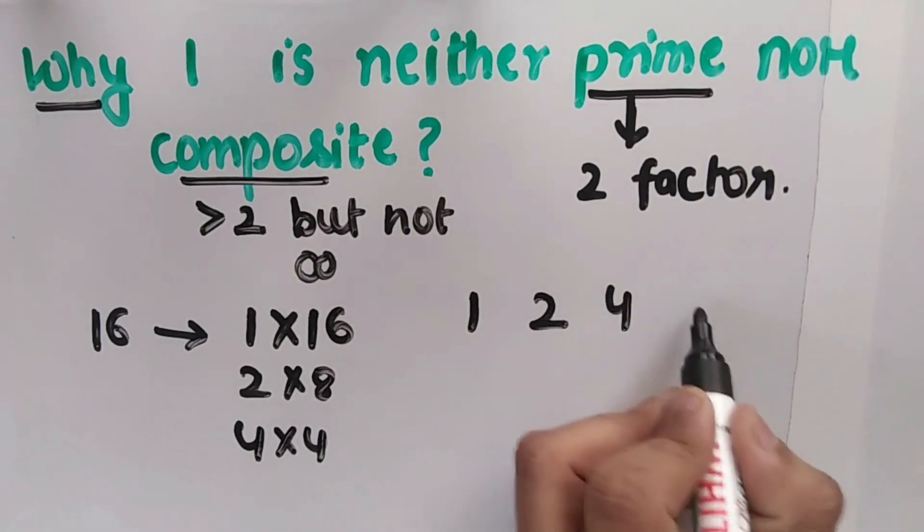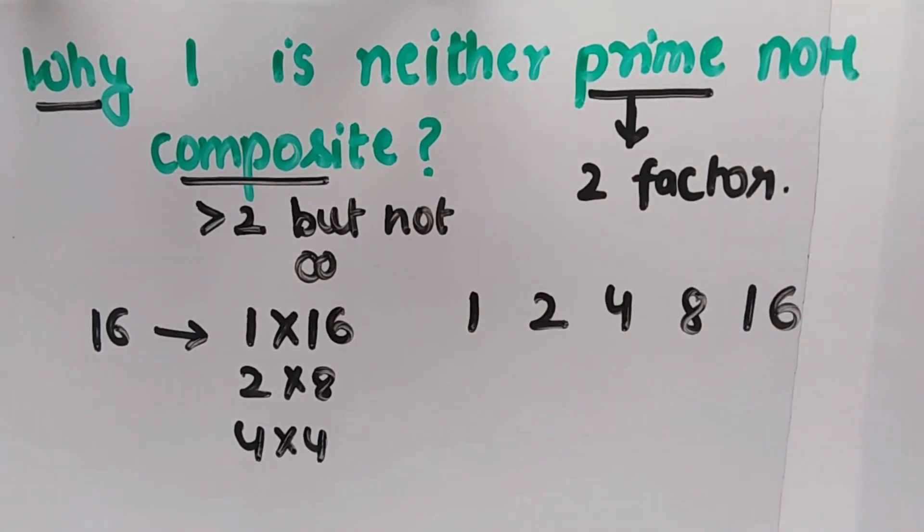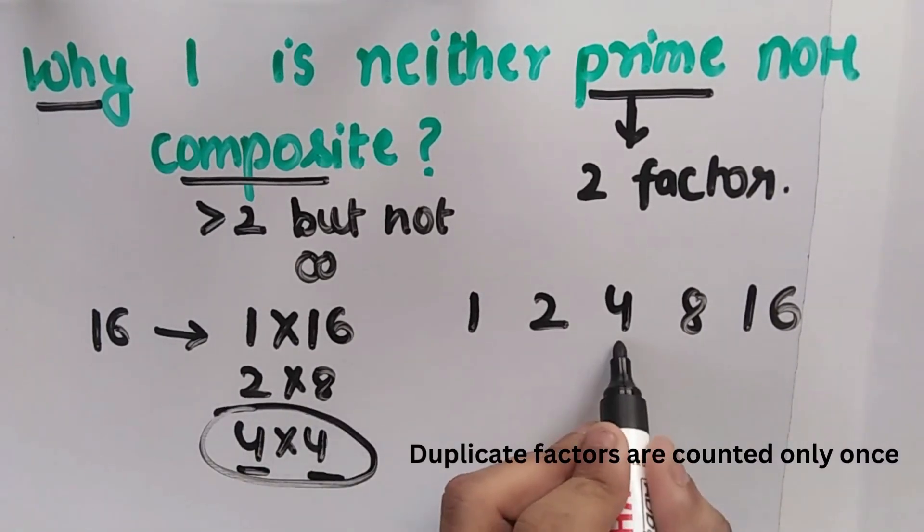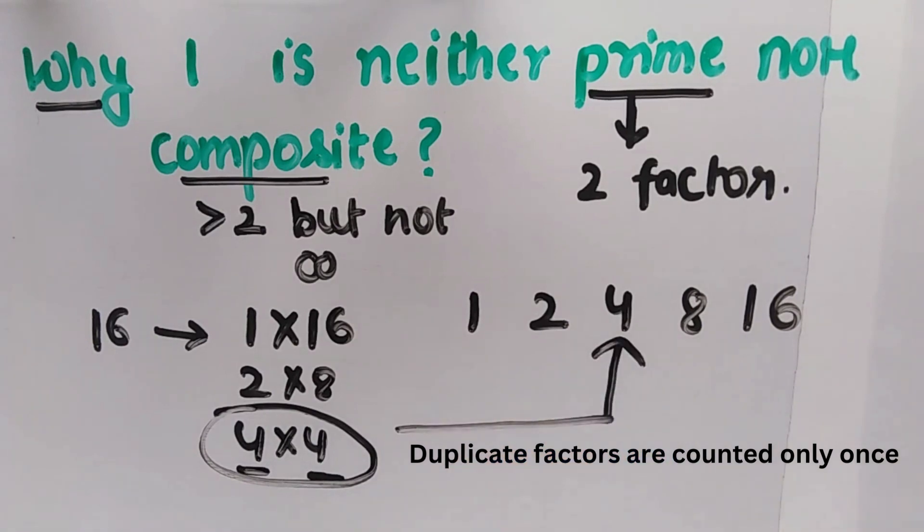1, 2, 4, 8, 16. See, we have to see one thing here: 4 times 4, but we have counted it only once. We have counted it only once in the factors.